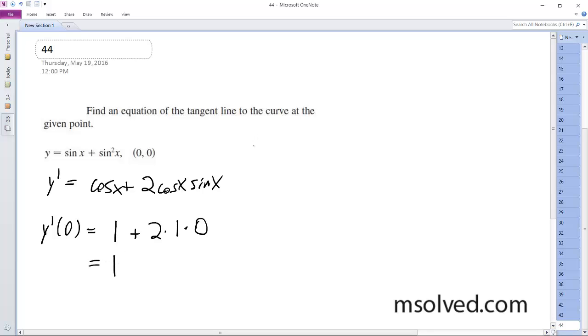So we plug in the point slope equation, y minus 0 is equal to 1 times x minus 0. And then we get y is equal to x. That's it. Pretty easy.